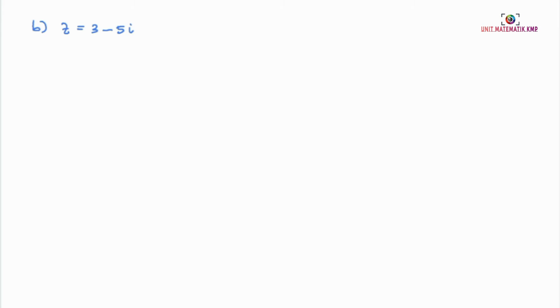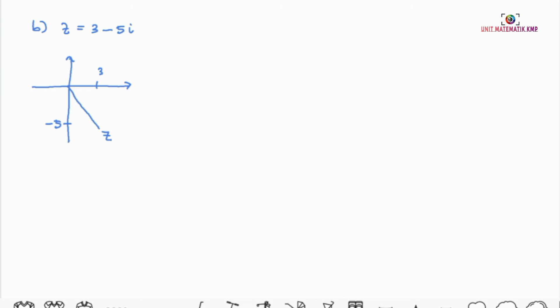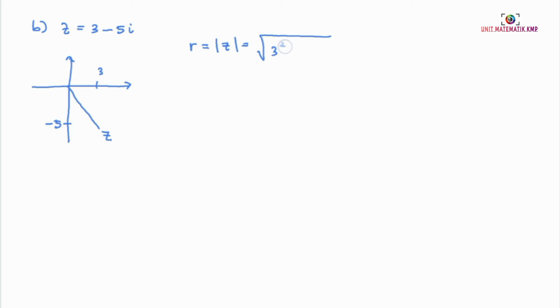For example B, Z equals 3 minus 5i. To represent Z on the Argand diagram, we first draw the X and Y axes. The real part is 3 and the imaginary part is negative 5. This is our Z on the Argand diagram. To find the modulus Z, we take the square root of 3 squared plus negative 5 squared, which gives us the square root of 34.